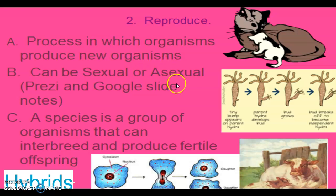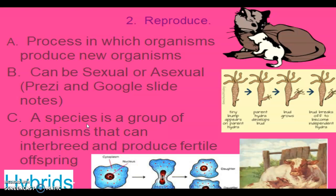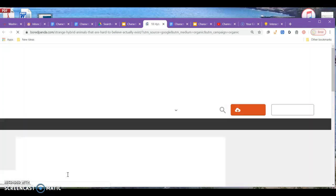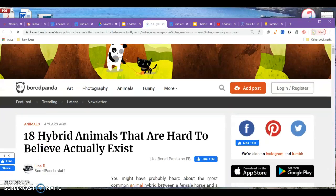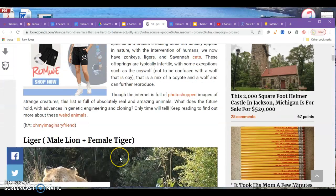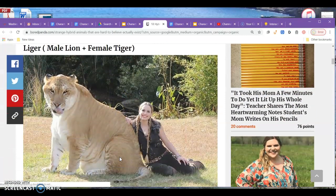In asexual reproduction, you get organisms that are identical to the parents. When it comes to the definition of a species — something you might encounter on a standardized test — it's all about reproduction, not color or diet. It's all about successful reproduction. You've probably seen hybrids: there's the liger, from a male lion and a female tiger, or it could be a tigon depending on which is the male and which is the female.